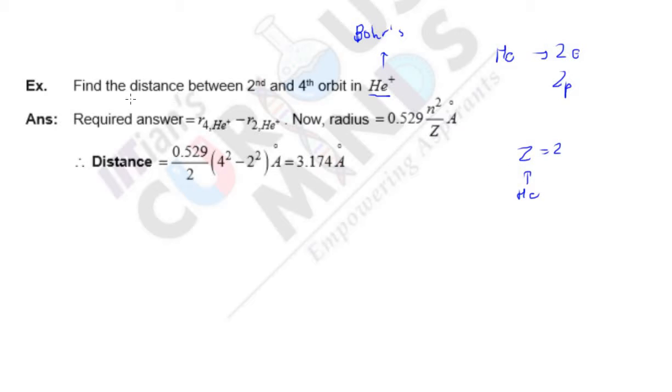So now, what is the required distance? It is nothing but r4 minus r2. First we substitute values n as 4 then as 2. So you can see 0.529 upon 2, this is the z value. Taking common, into 4 square minus 2 square, right? Fourth orbit minus second orbit.